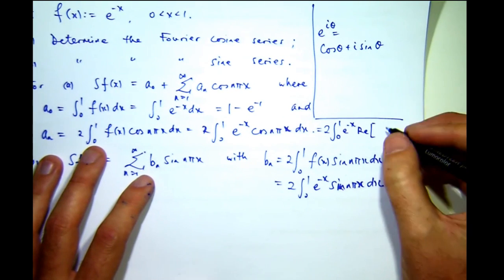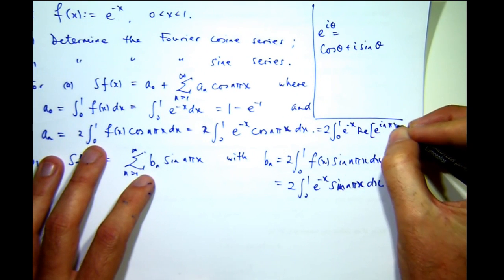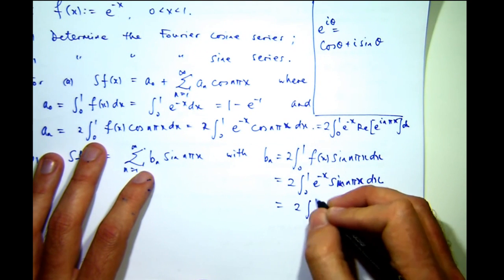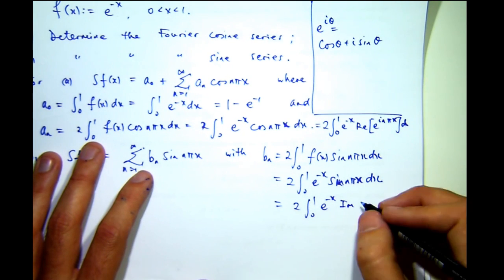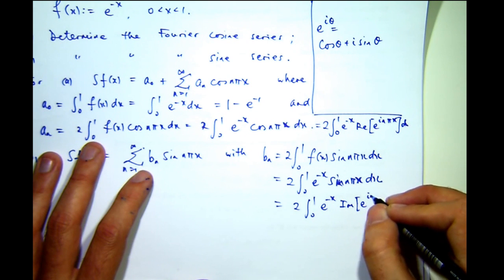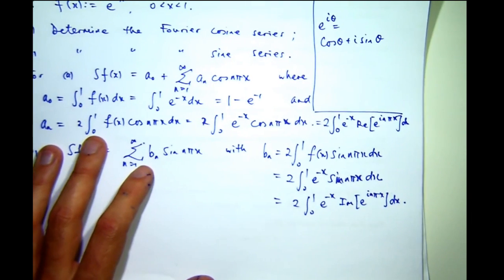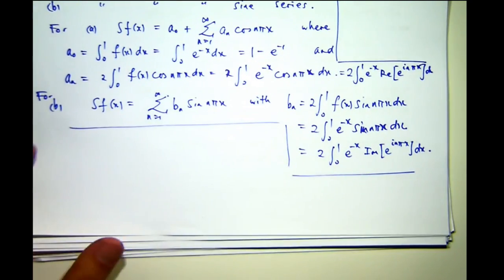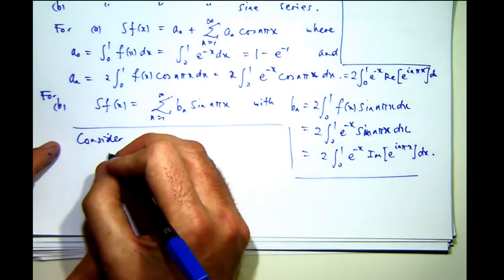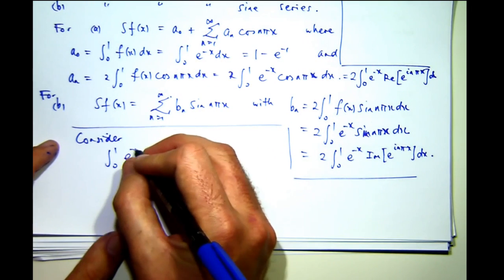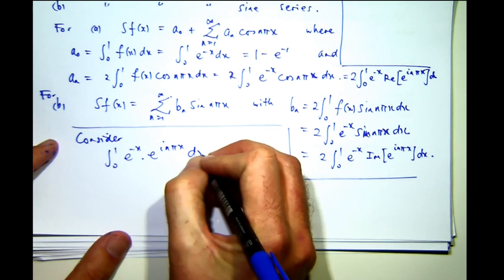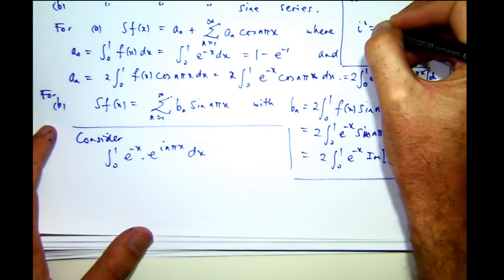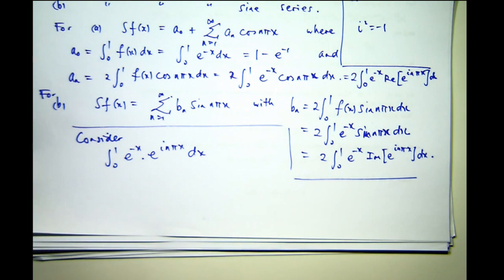It's the real part of e to the i n pi x. So, actually, what we're going to do is work with exponentials here. Now, I'm not going to worry about the 2s. I'll come back to that later. We're going to do this integral. Now, remember, i squared is just minus 1 in this setting. So, this integral here is very simple. There's no integration by parts, and you can get the real and the imaginary part in one swoop.